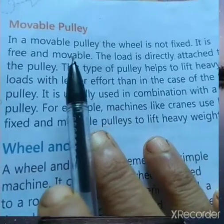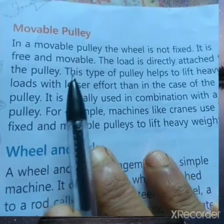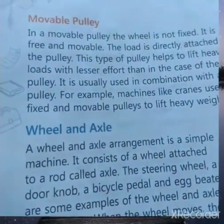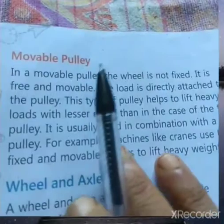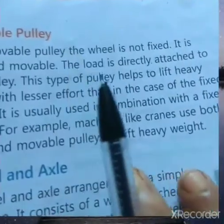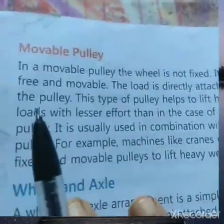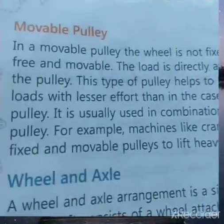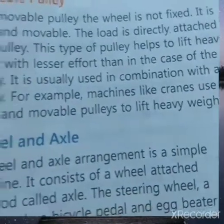We are going to continue Chapter 9 on machines. Yesterday we studied about the pulley, so now we are going to study about the movable pulley. In a movable pulley, the wheel is not fixed — it is free and movable. The load is directly attached to the pulley.